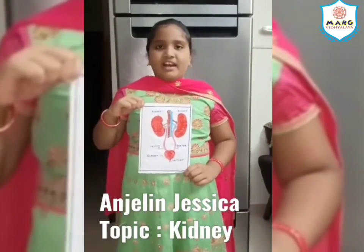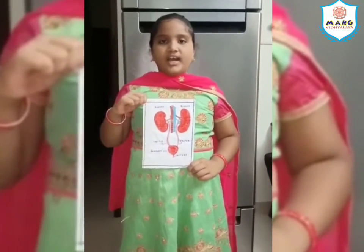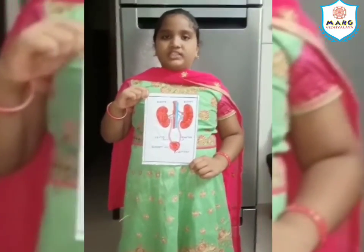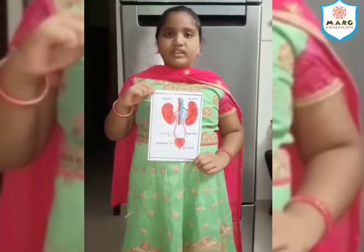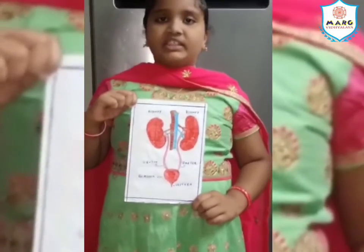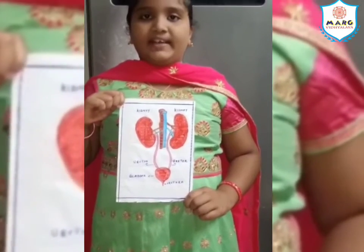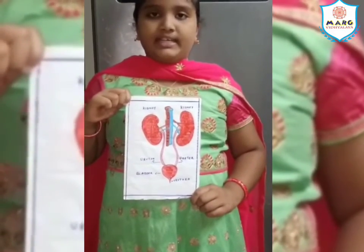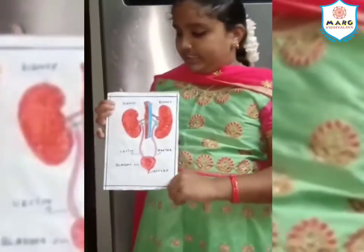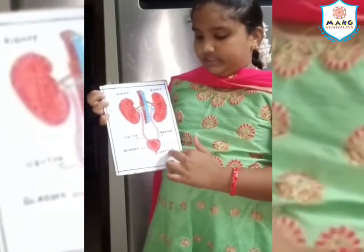Hi all. I am Angeline Jessica. I am studying in third grade. Today I am going to explain about kidneys. Kidneys are two bean-shaped organs, each about the size of our fist. They are located just below our ribcage, one on each side of our spine. Kidneys filter the blood and the wastewater from the blood is called urine. Kidneys remove the urine. The parts of the kidney system are: two kidneys, two ureters, the bladder and the urethra.